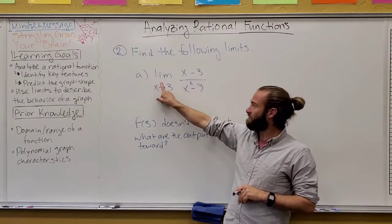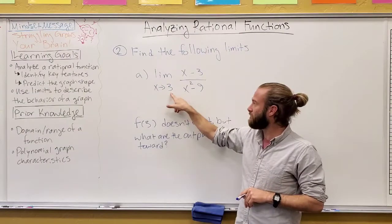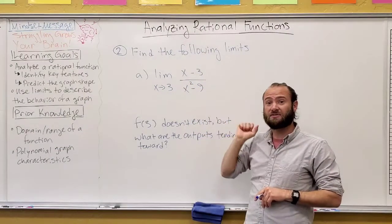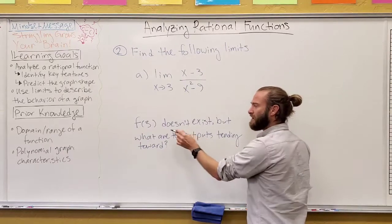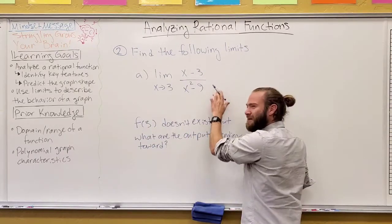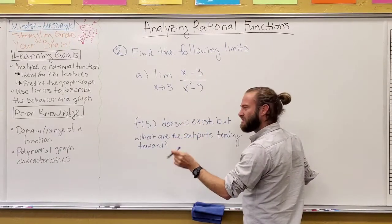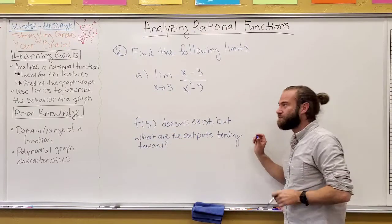So, find the following limit. For now, first one, the limit is x approaches three of this. This is our g of x function, which was our orange graph, and one thing to make a point of here. A limit sometimes is confusing with students because they think, can we just plug it in?